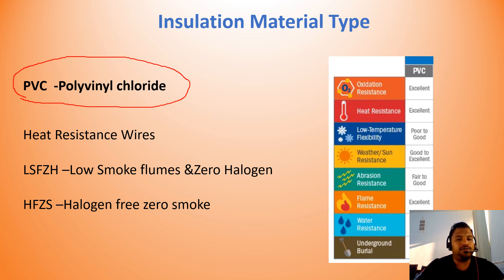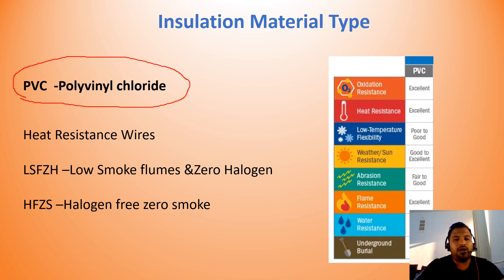LSF-ZH cables are used in high-density population areas, because during a fire, PVC wires can produce halogen and smoke, which causes suffocation and increases the chances of human death. That's why LSF-ZH and halogen-free smoke cables are used in high-density populations. For a single, double, or triple storey domestic building, these are not recommended as they increase cost. Fire rated cables are also available, used in high-risk fire areas such as fire alarm systems and emergency light systems, but are not required for domestic G+1 or G+2 buildings. For those, general PVC wires are sufficient.